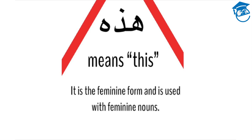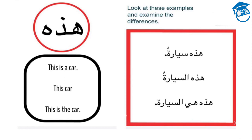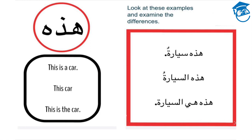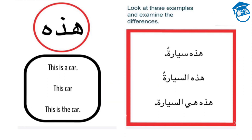Now let's look at Hathihi. Just like Hadha, Hathihi means 'this' in Arabic. However, Hathihi is the feminine form and it's used with feminine nouns. Look at these examples: Hathihi Seyaratun means 'this is a car.' Hathihi a-Seyaratu means 'this car.' Hathihi Hia a-Seyaratu means 'this is the car.'